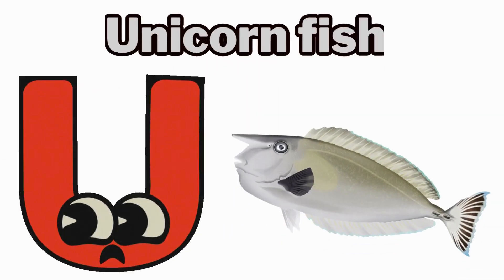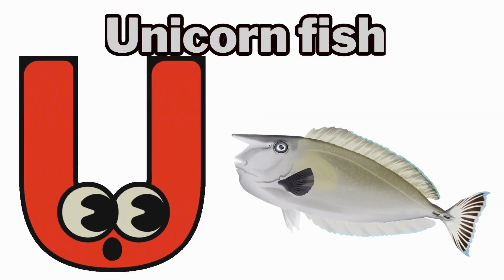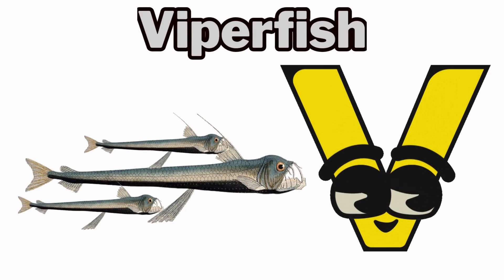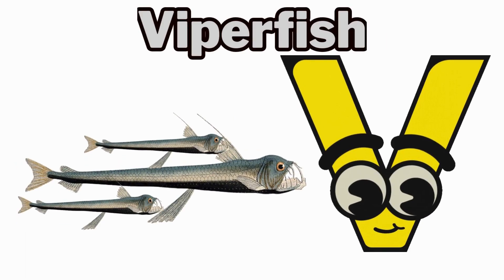U is for unicorn fish. Ha, unicorn fish. V is for viperfish. V, viperfish.